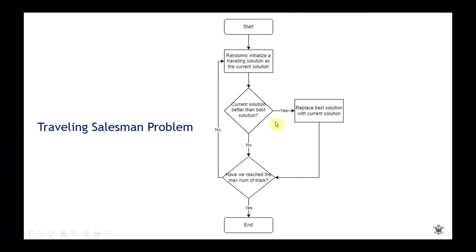And then what we want to do is calculate the distances, the total distance based on that solution and compare it to the current best solution. If it's good, if it's better than the best solution that we have currently, then we'll replace the best solution with current solution. If not, we're going to go back. If not, we're going to see have we reached the maximum number of trials because remember that this is a heuristic problem.